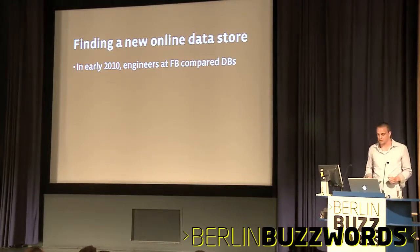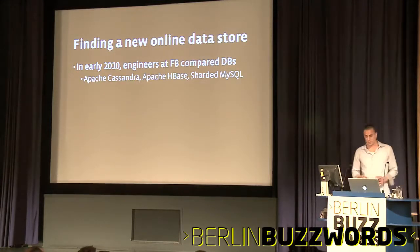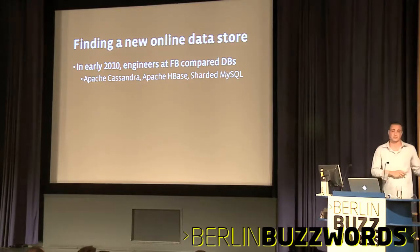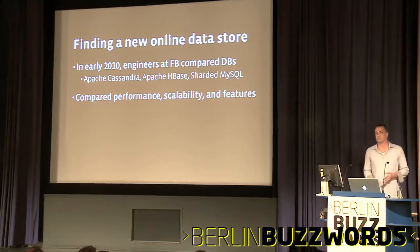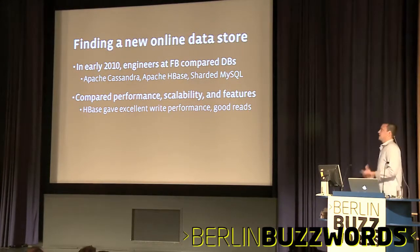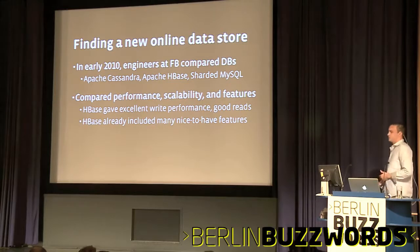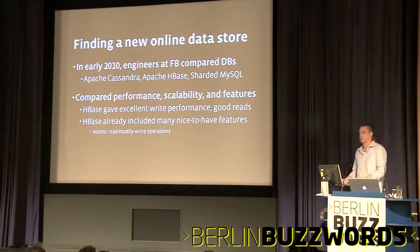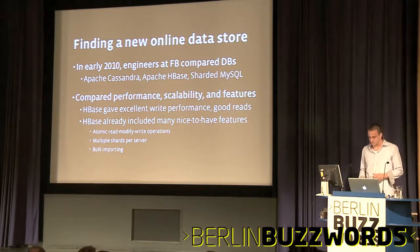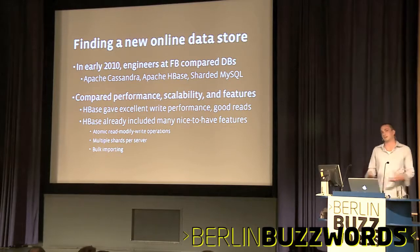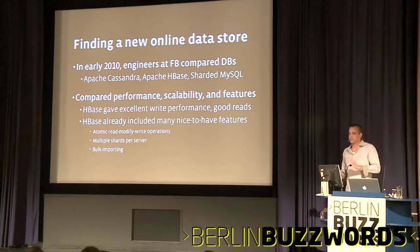So in early 2010, around the time I joined Facebook, engineers were comparing data stores. The three leading candidates were Apache Cassandra, Apache HBase, and our existing sharded MySQL system. We compared them on dimensions of performance, scalability, and features. What we found was HBase gave us excellent write performance, good enough read performance, and already included a bunch of nice-to-have features: atomic read-modify-write operations, kind of compare-and-swaps; multiple shards per server, which made recovery more optimal; and bulk importing facilities.